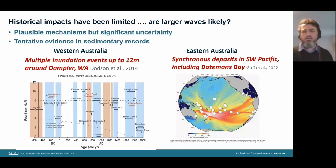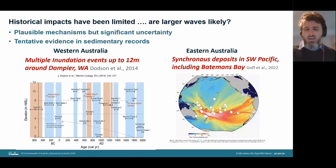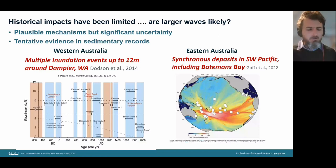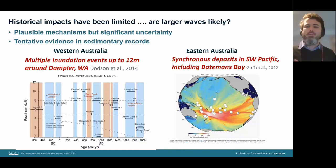On eastern Australia there is growing evidence of something very large happening on the Kermadec-Tonga Trench around the 15th century — a bunch of paleo-tsunami deposits appearing to occur around the same time, including one in Bateman's Bay. Interpretation of these records has challenges, but there is some suggestion that very large events have occurred.